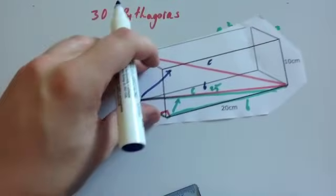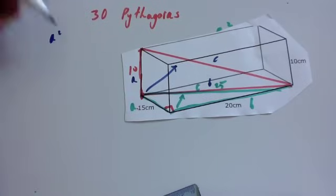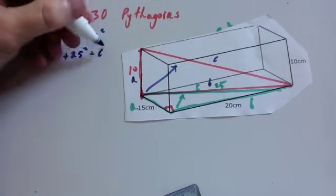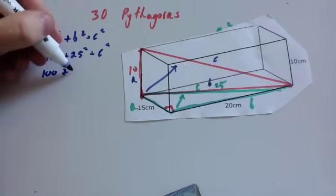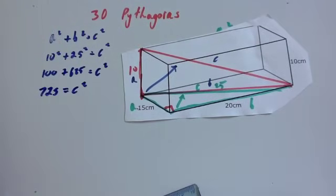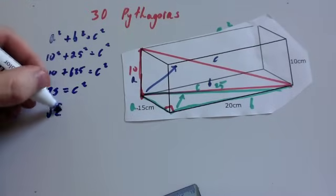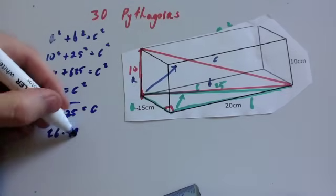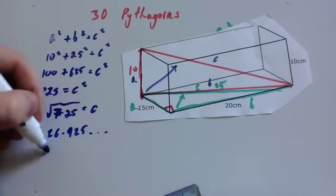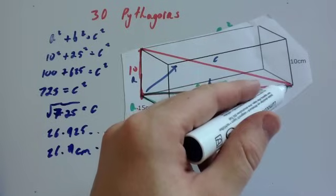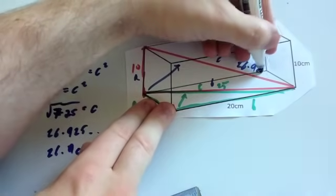A squared plus B squared equals C squared. So 10 squared plus 25 squared equals C squared. 10 squared is 100, 25 squared is 625, and adding them together gives C squared: 725 equals C squared. Square root of 725 gives C. The square root of 725 is 26.925, which is approximately, rounded to one decimal place, 26.9 centimetres. So the length from one corner of the cuboid to the opposite corner is 26.9 centimetres to one decimal place.